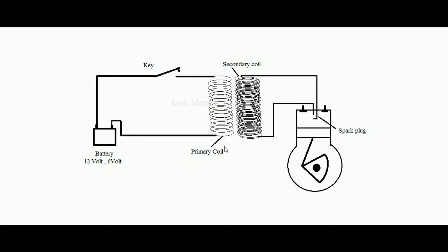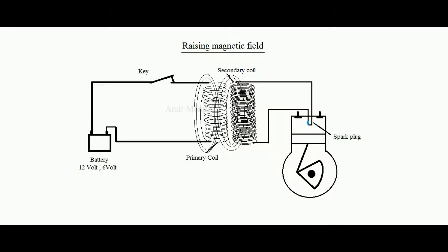When key K is pressed, the primary circuit is now closed, so current will start flowing through the primary coil. This will develop a magnetic field in the coil, and the magnetic field will rise from zero to maximum.